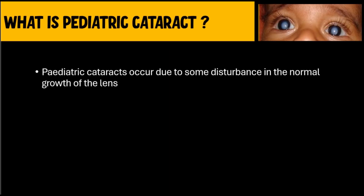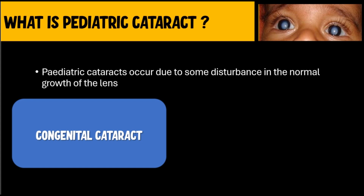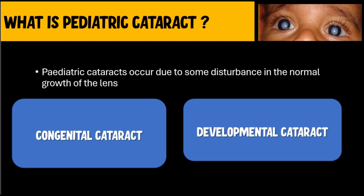What is a pediatric cataract? Pediatric cataracts occur due to a disturbance in the normal growth of the lens, and therefore we have two types of pediatric cataracts broadly: congenital cataract and developmental cataract.